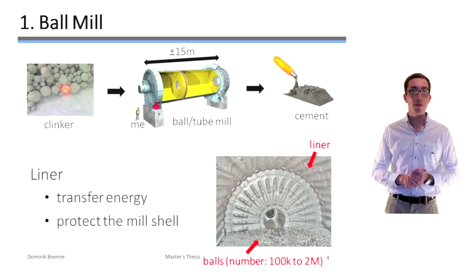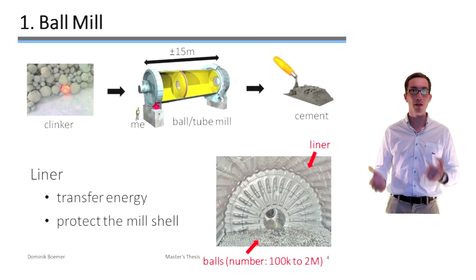To recap, ball mills are used to grind the feed material like clinker in the cement industry in order to enhance its chemical and physical properties by increasing its surface to volume ratio.